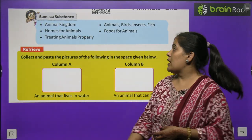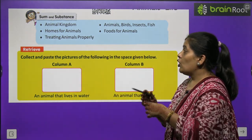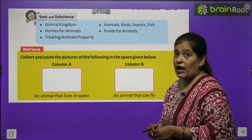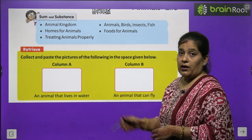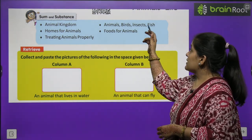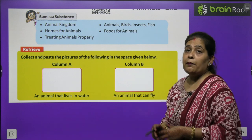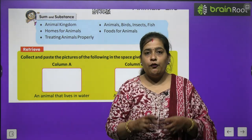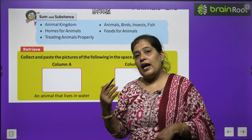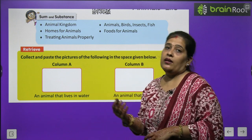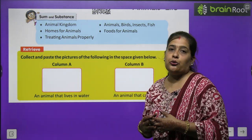This chapter is about Animal Kingdoms, Homes of Animals, Treating Animals Properly, Animals, Birds, Insects, Fish, and Food of Animals. This chapter is about our animals. We need to live and grow.